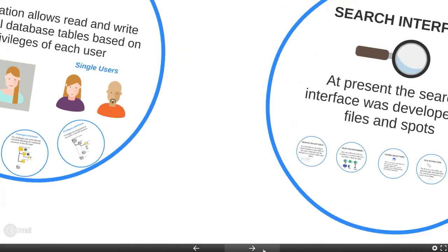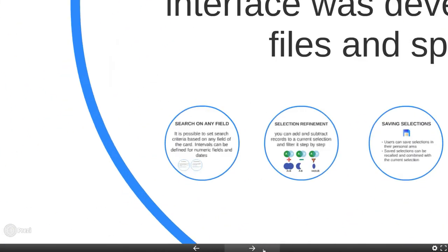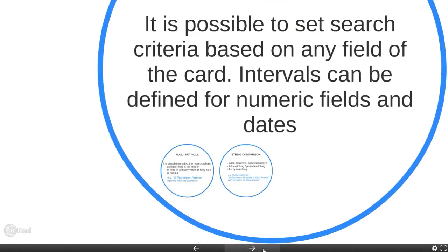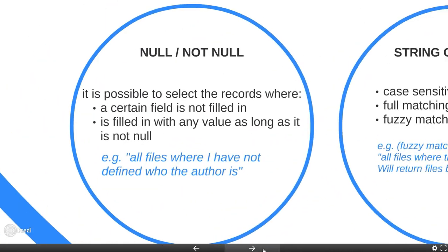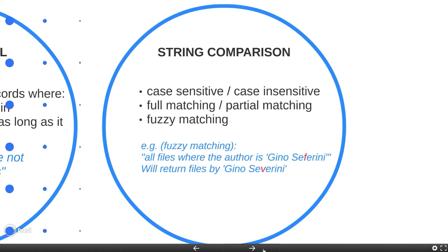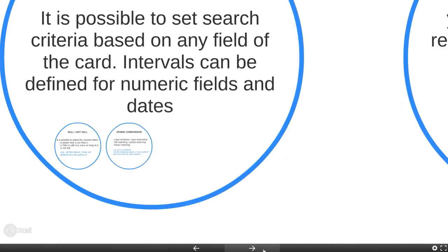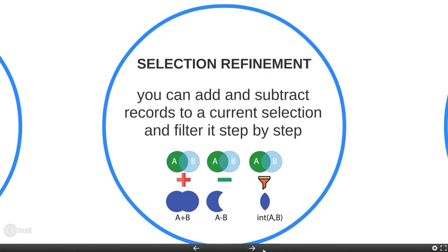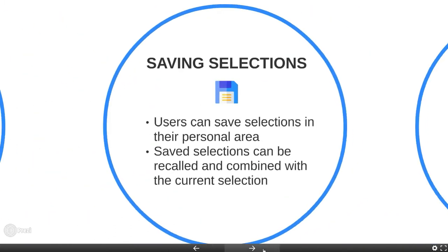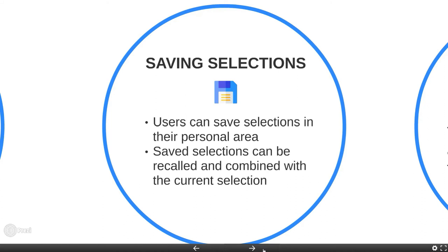The application has a sophisticated search interface that allows you to search for records based on any field. For the text fields, it is possible to use different string comparison operators. Fuzzy search allows, for example, to search among keywords, even if they are not written exactly the same way. Query results can be added, subtracted, or intersected with a current selection. This makes the job easier. Each user can save their selection in a personal area.